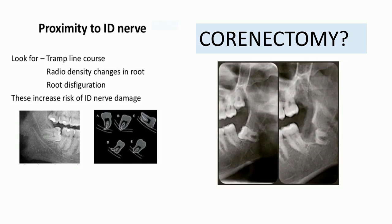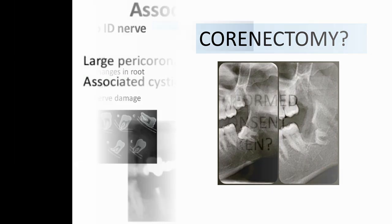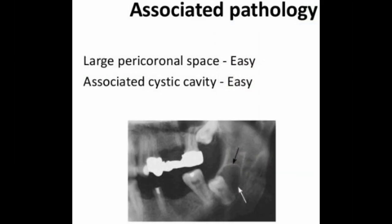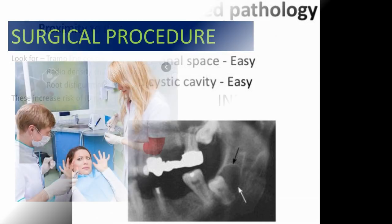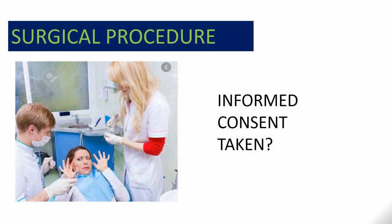When there is risk of inferior alveolar nerve damage, removal of the wisdom tooth is done very carefully, or an alternative method like coronectomy is preferred — where only the crown portion of the tooth is removed, leaving the roots inside the socket. In cases of associated pathology with a large pericoronal space or associated cystic cavity, these teeth are easier to remove.